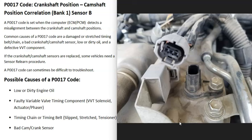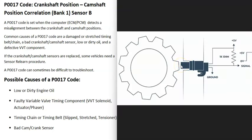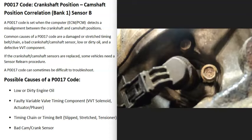The last possible cause is a bad camshaft or crankshaft position sensor — specifically the bank one, sensor B camshaft position sensor. You can test it and also check the wiring going to it, since wiring issues cause the same problems as a bad sensor. These sensors monitor the crankshaft and camshaft as they spin — each time a piece of metal passes in front of the sensor, it sends a signal to the computer, which counts the teeth to monitor timing. Test the sensor, check voltage, and verify a good ground.